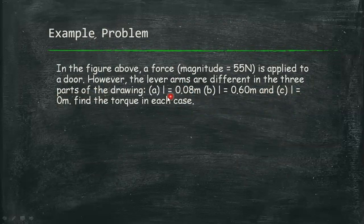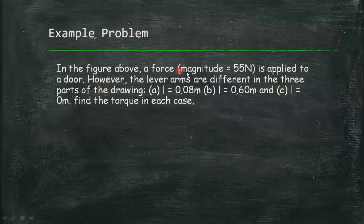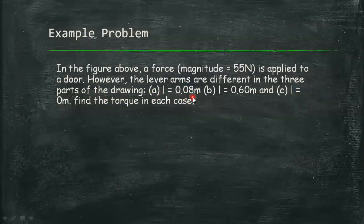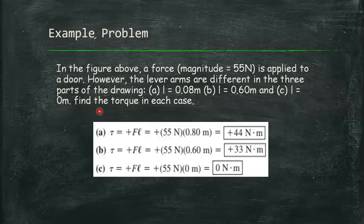Let's consider this example problem. Consider the figure at the previous slide. A force of magnitude 55 newton is applied to a door. However, the lever arms are different in the three parts of the drawing. Part A is 0.80 meter, part B the lever arm is 0.60 meter, and part C the lever arm is 0 meter. Find the torque in each case. Using our formula, the magnitude of the torque is equal to the magnitude of the force times the length of the lever arm. We have the solution.